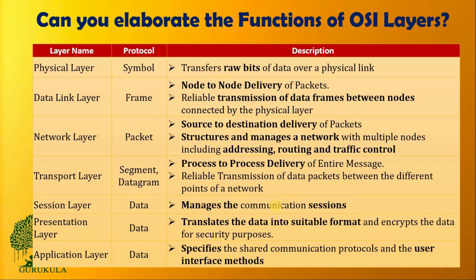The network layer also takes care of routing the packet in the correct direction, and then it handles traffic control on the internet. Coming to the fourth layer, we have the transport layer.